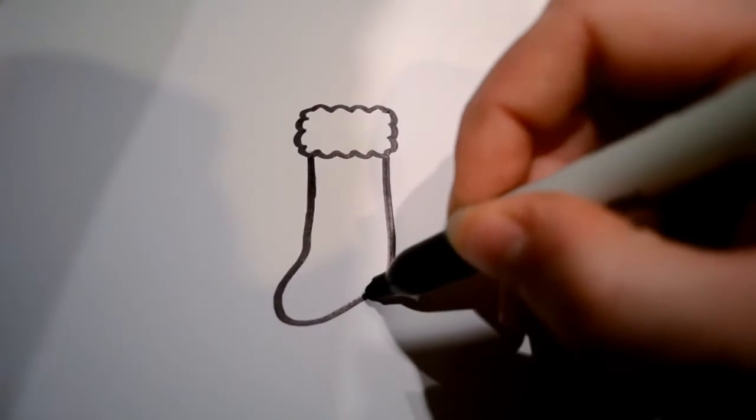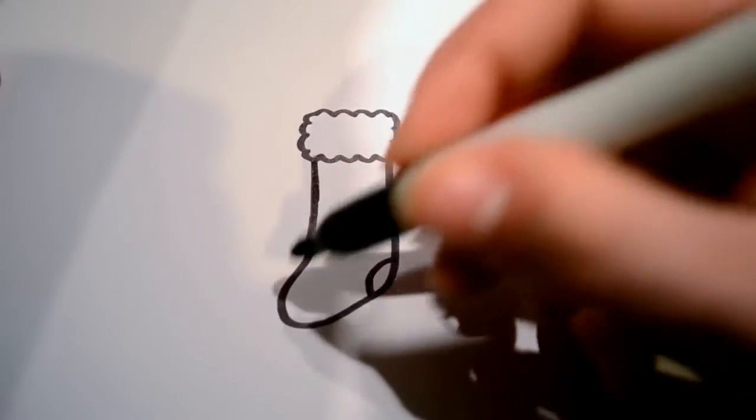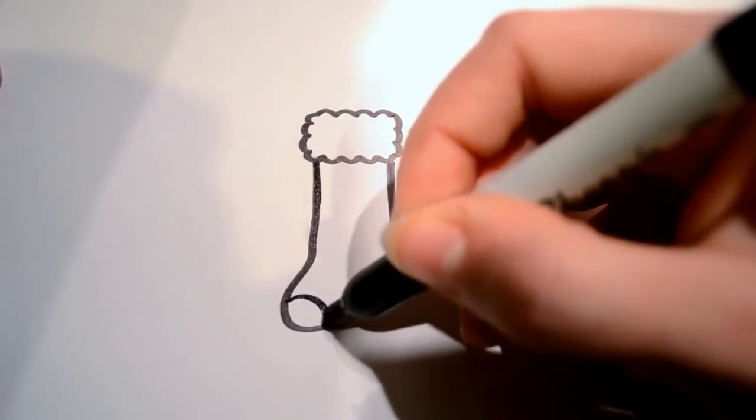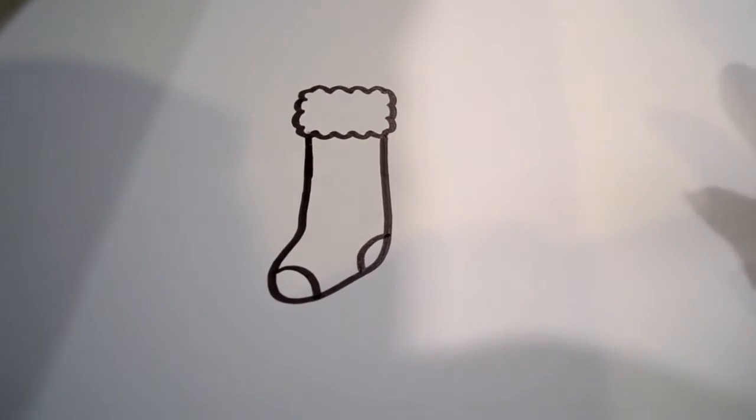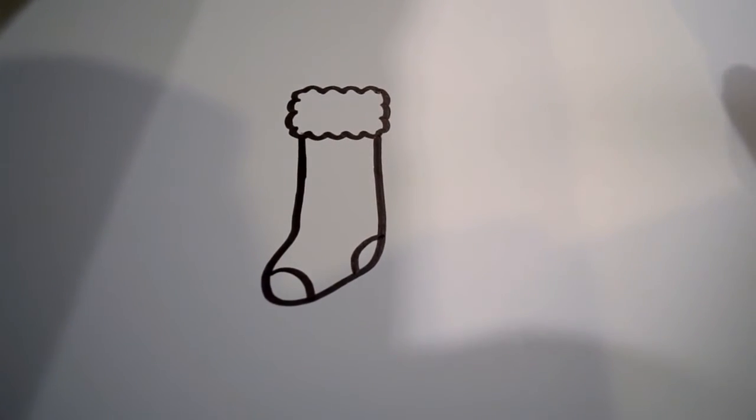And then you're going to want to draw two semi-circles that just go on the toe and then on the heel just for some detail.